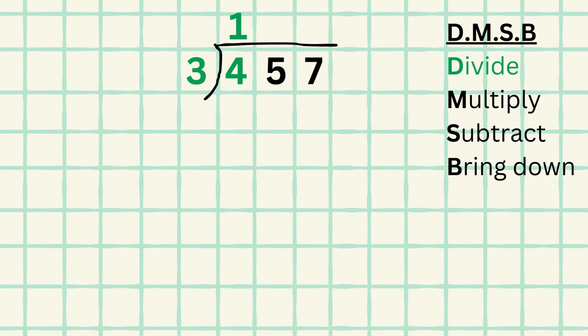The first step is to divide the first digit. 3 only goes into 4 one time, and so 1 is our first digit in the answer. Then our next step is to multiply, and 1 times 3 equals 3. So we place our 3 beneath the 4. Then we must subtract 3 from 4, which leaves us with the result of 1.